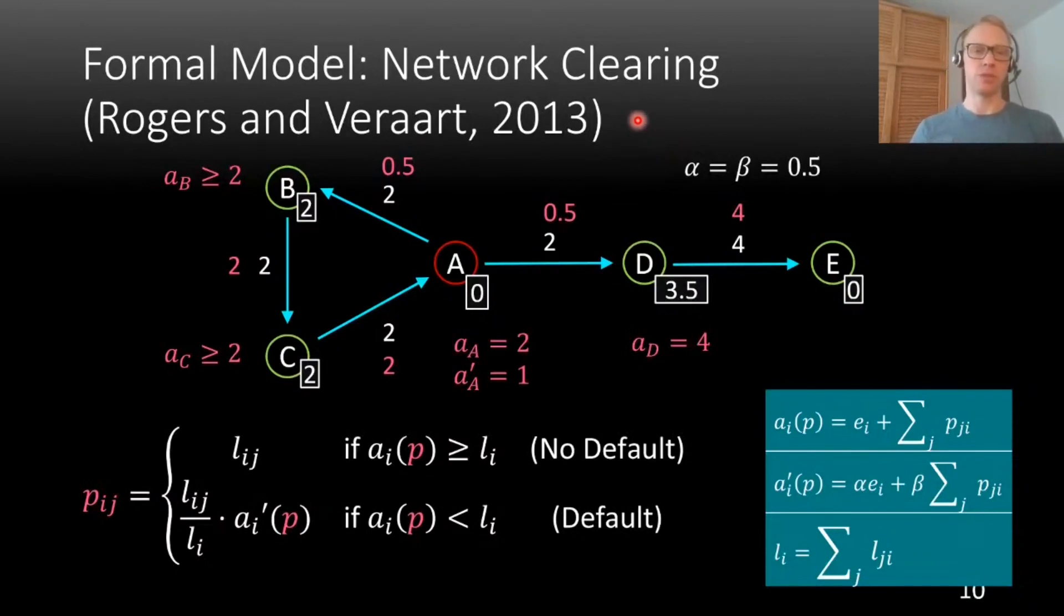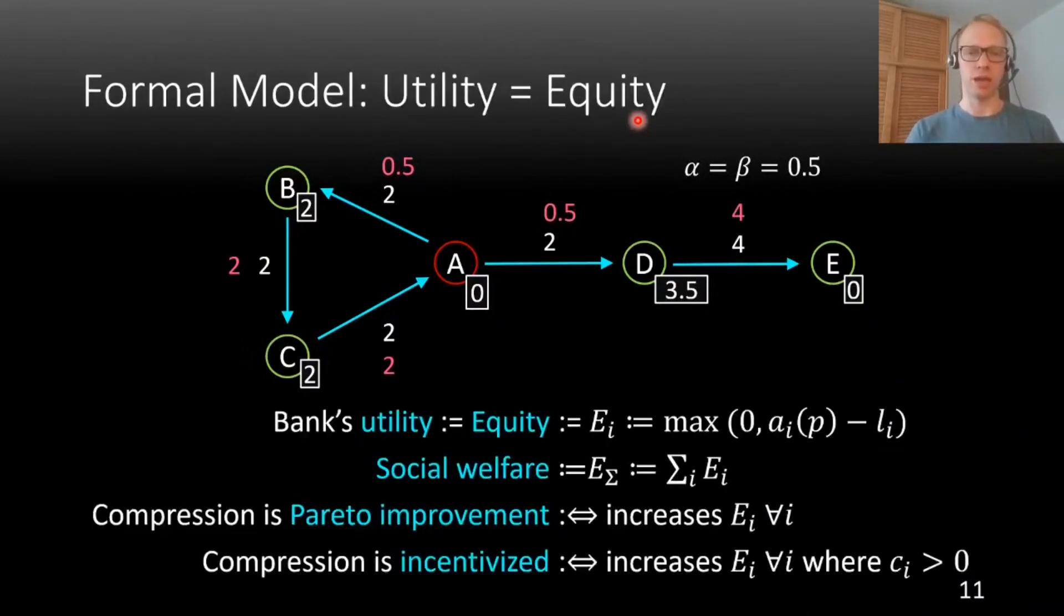From these payments, we assume that banks derive utility equal to their equity. The equity of the bank is what is left of the assets after all the liabilities are paid, or zero otherwise. And this is equal to the value that the shareholders derive. Let's see what the equities are. So B has total assets of 2.5 here and liabilities of 2, so the difference is 0.5. C has assets of 4 and liabilities of 2, so the equity is 2. A defaults and therefore has equity of 0. D is not in default, but assets equal liabilities, therefore equity is also 0 here. And E has 0 liabilities, so its equity is equal to its assets. Now we can also compute social welfare in the utilitarian sense, which is just the sum of the equities, and this is then 6.5.